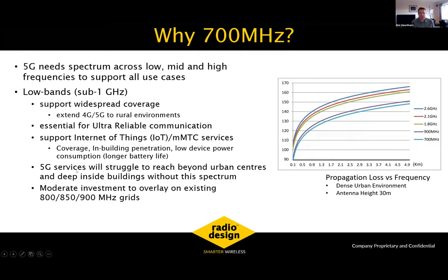It's fair to say that 5G services would struggle to reach beyond urban centers and deep inside buildings without this low-band spectrum. It's also a relatively straightforward and modest investment to overlay 700 MHz — or 600 MHz for that matter — onto existing 800, 850, or 900 MHz grids.